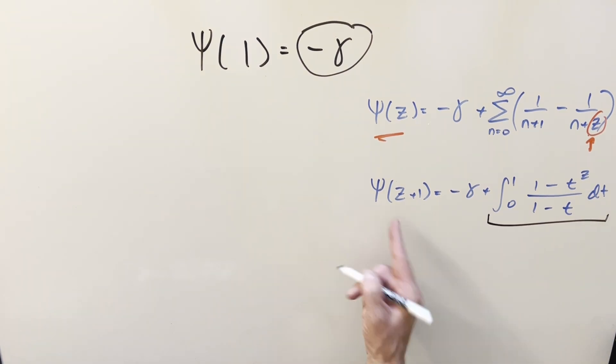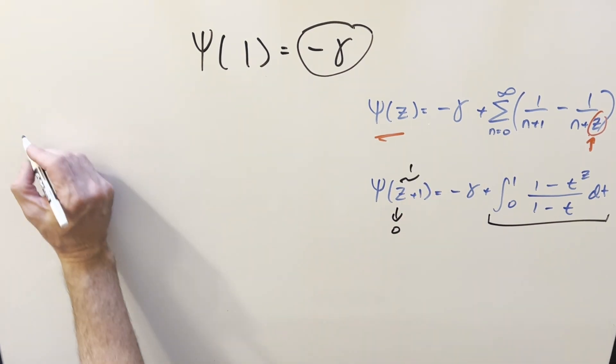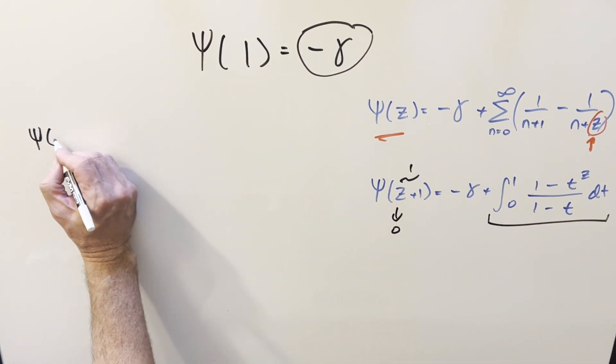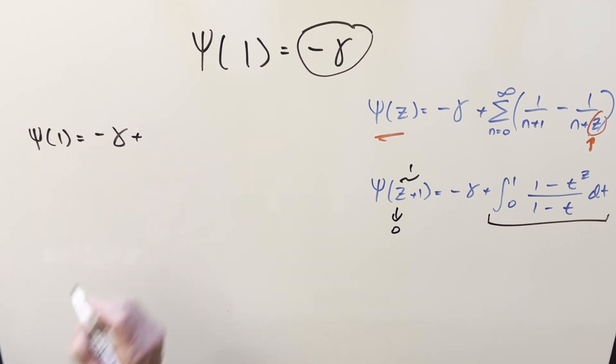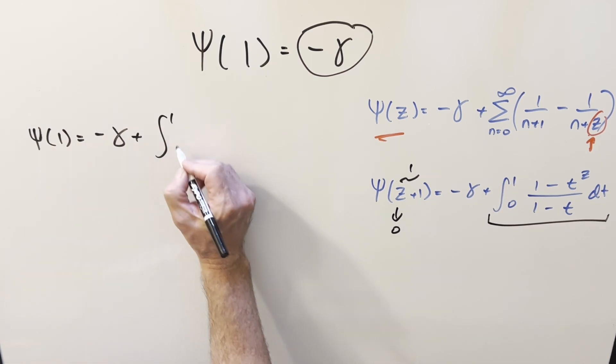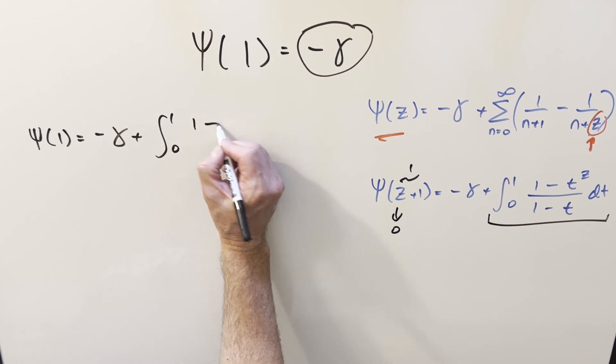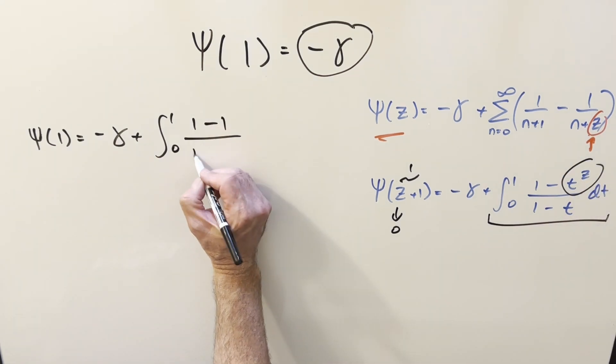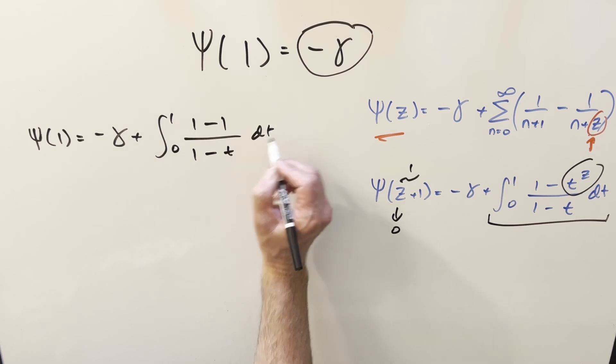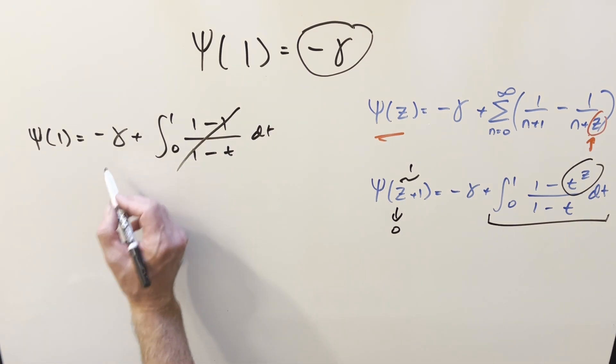But anyway, let's just go ahead here. Now our Z value needs to be 0 in order for this here to be 1. So we go ahead and plug in 0 now. In order to get a value for digamma 1, we get minus Euler-Mascheroni constant. The integral becomes integral from 0 to 1. We have 1 minus T to the 0 right here is just a 1. And what happens? The whole integral just gets zeroed out and we're left again with just Euler-Mascheroni constant.